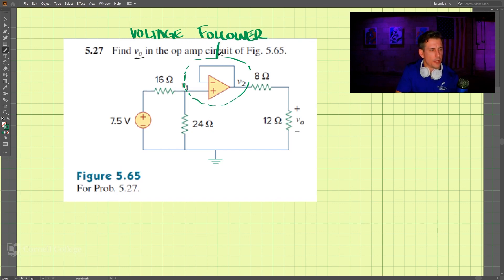This is a voltage follower up here, and in a voltage follower v1 is equal to v2. Let's take a look at the current. We have a current and we can call this i naught coming here.